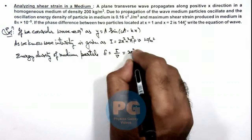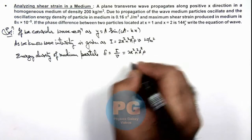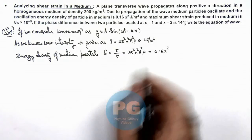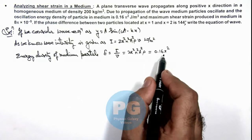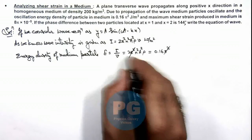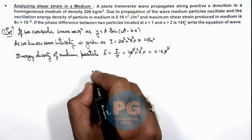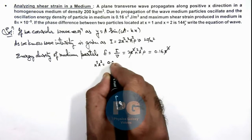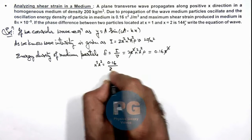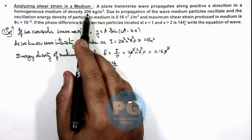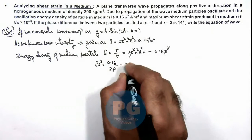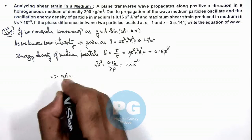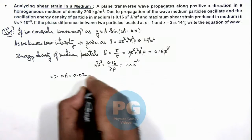This we write as E which is intensity upon the velocity, which gives 2π²n²ay²ρ. And we are given with this energy density as 0.16π². So from this relation, if we simplify this value, π² gets cancelled out, and the value of n²ay² we are getting is equal to 0.16 divided by 2ρ, and density we are provided with 200 kg per meter cube. So this is 4 × 10^-4, which gives us the product of frequency and amplitude, which is 0.02. Say this is our first equation.